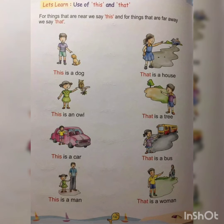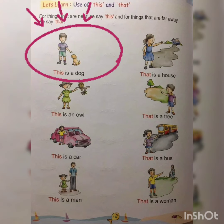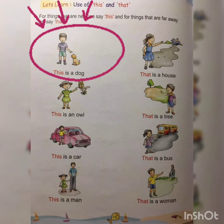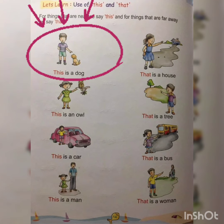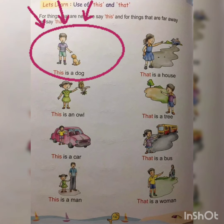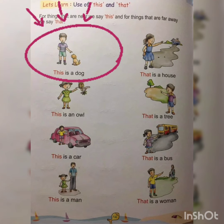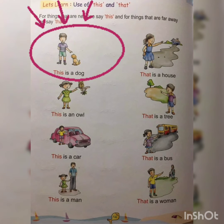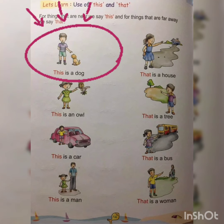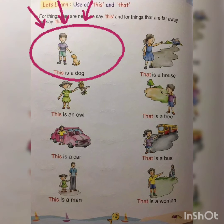Now, look at the first picture. We can see a boy and a dog. The dog is sitting near the boy and the boy is standing near the dog. The boy is pointing at the dog next to him and he says this is a dog. We use this because the dog is near the boy. It's very easy, isn't it?